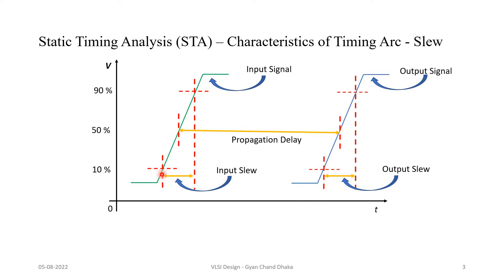The slew rate forms a kind of triangle where the rate is the voltage value divided by the time value. This input slew can also be referred to as transition delay or input transition delay, because the slew rate is the rate of change of the transition, and the transition delay is derived from it. From the input slew, we can calculate this delay.